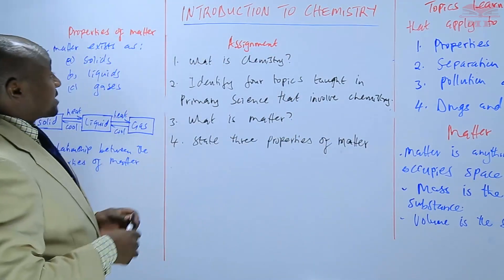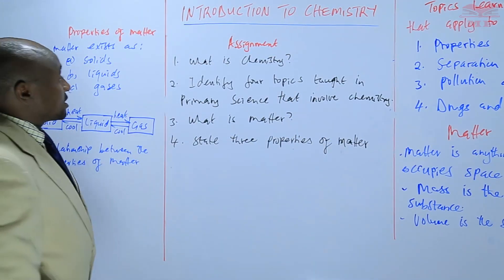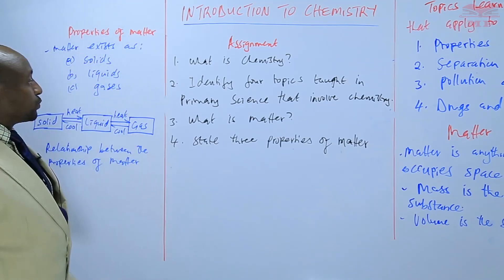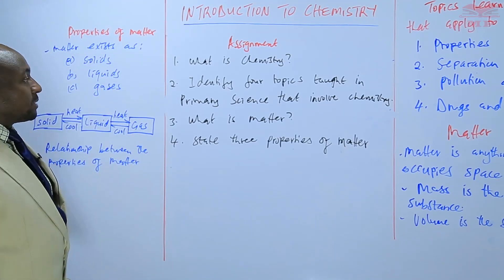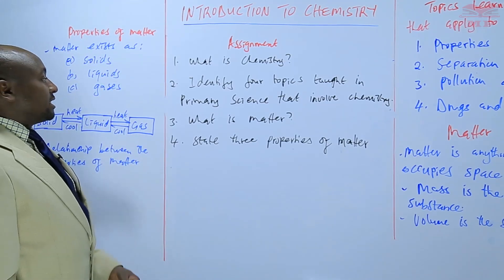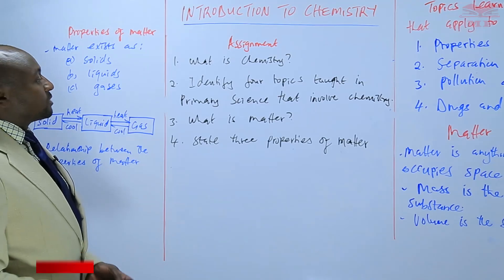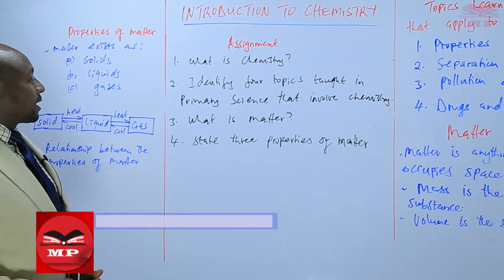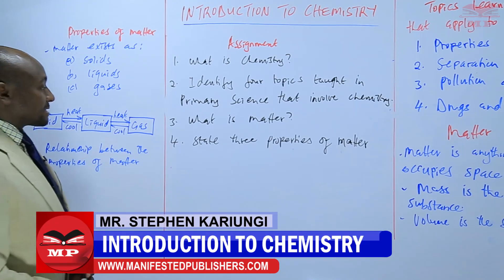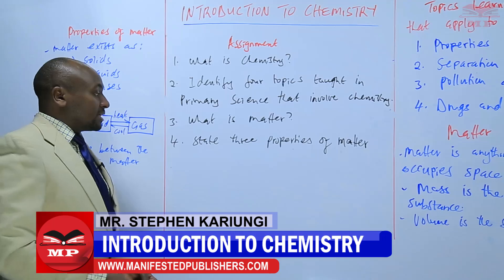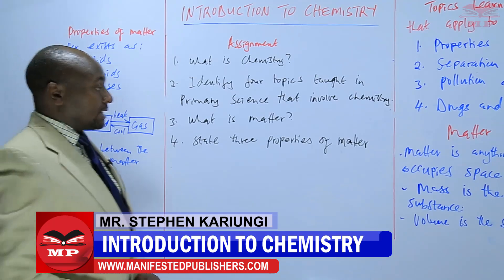So the assignment: question one, what is chemistry? Number two, identify four topics taught in primary science that involve chemistry. Number three, what is matter? And lastly, number four, state three properties of matter.